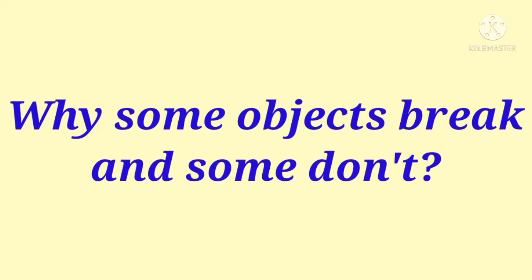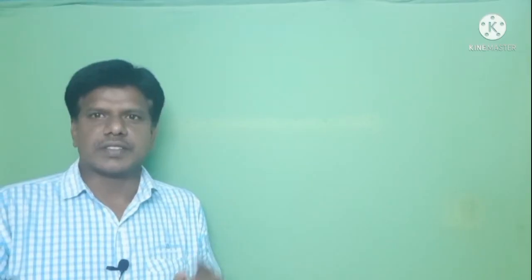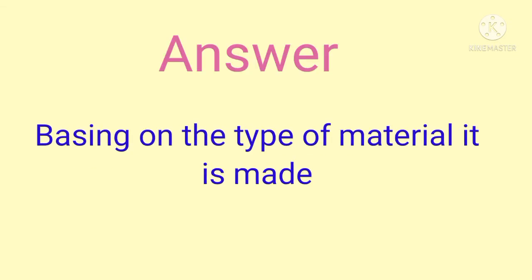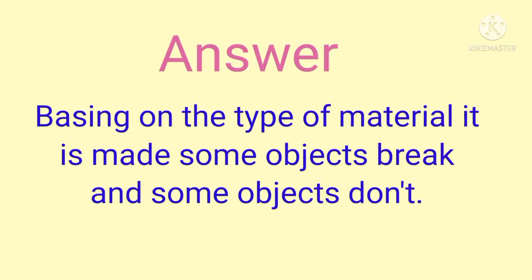Okay, now the question is: can you tell why some objects break and some do not? Guess the answer. Based on the type of material it is made of, some objects break and some do not — just like glass and plastic.